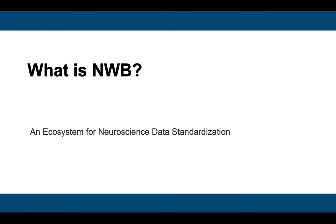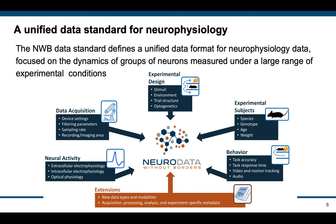So what then is NWB? NWB is an ecosystem for neuroscience data standardization. NWB defines a unified data standard for neurophysiology data, focused on the dynamics of groups of neurons measured under a large range of experimental conditions. NWB supports a broad range of data types from end-to-end neurophysiology experiments, which includes recordings of neural activity via extracellular and intracellular electrophysiology, as well as optical physiology.